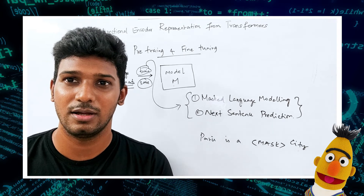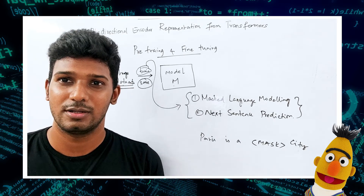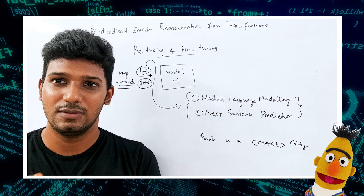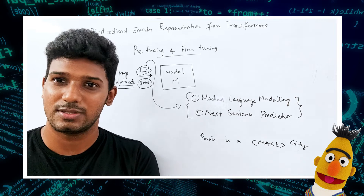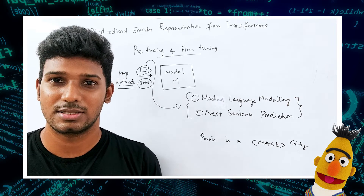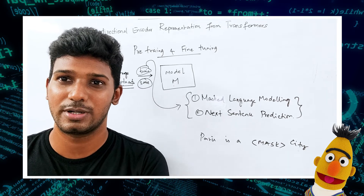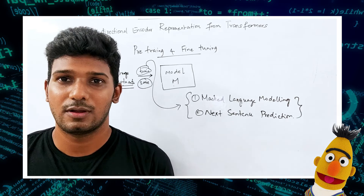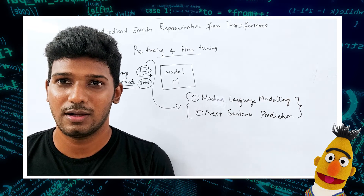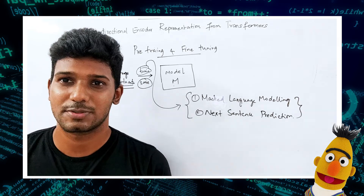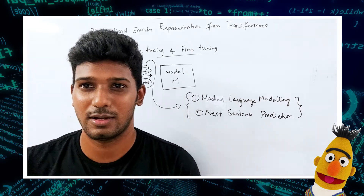Next Sentence Prediction works like this: there is a sentence A — for example, 'There was a kite' — and sentence B — 'it was flown by Adam.' We need to predict whether the second sentence is a follow-up of the first sentence, essentially predicting true or false. We will talk about these tasks in detail in upcoming videos. Until then, please like, share, and subscribe to the channel. See you in the next video — bye and take care!